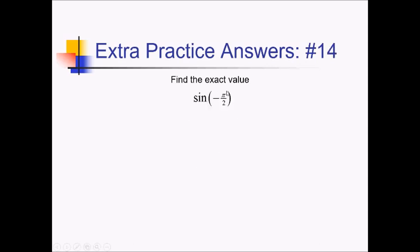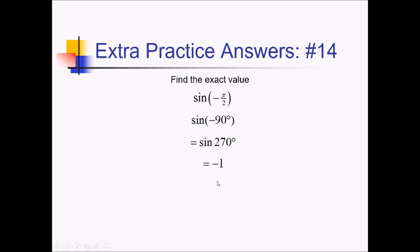To find the sine of negative pi over 2, one optional step you could do is turn this into degrees — this is really negative 90 degrees. Or you could think of this as positive 270 degrees if you add 360. Either way, we're talking about the sine at the bottom of the unit circle, the y value down there, which is going to be negative 1.